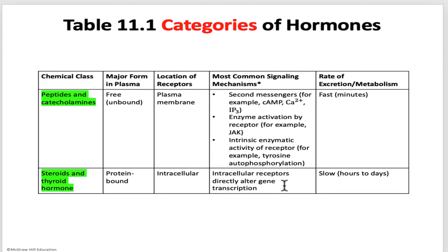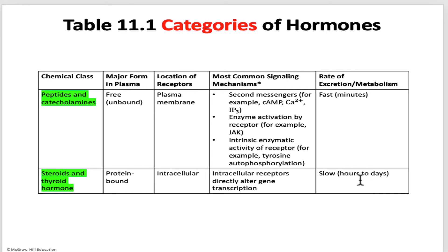Non-polar hormone receptors are located either in the nucleus or the cytoplasm. Another classification is that peptides and catecholamines can be excreted and metabolized quickly, so their effects can be dramatic, taking place within minutes. Whereas steroid hormones can exert effects over multiple hours to days.